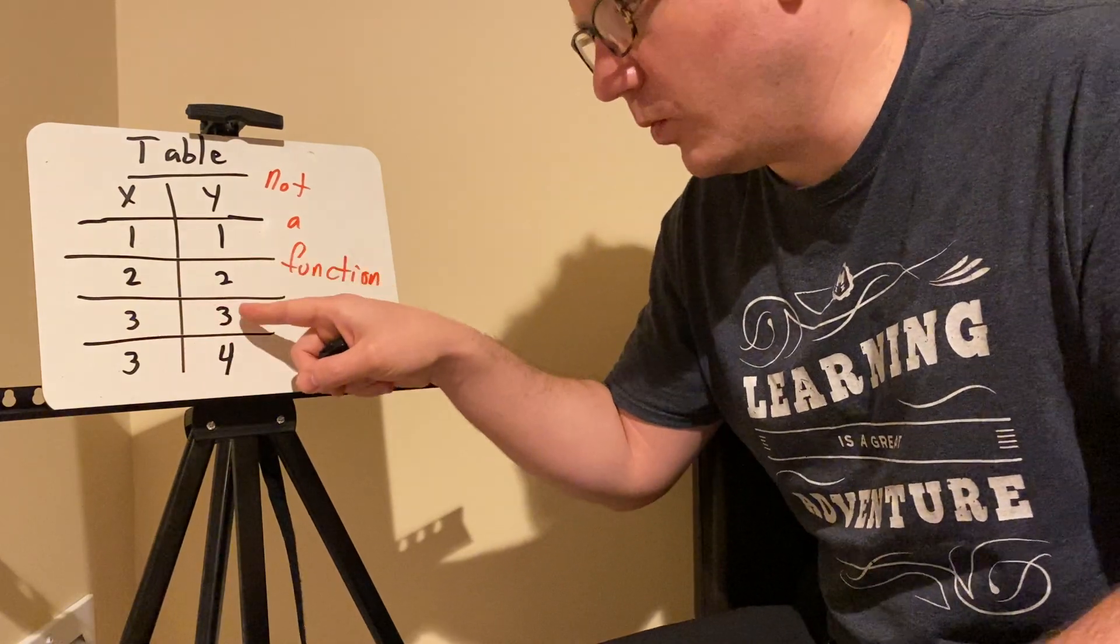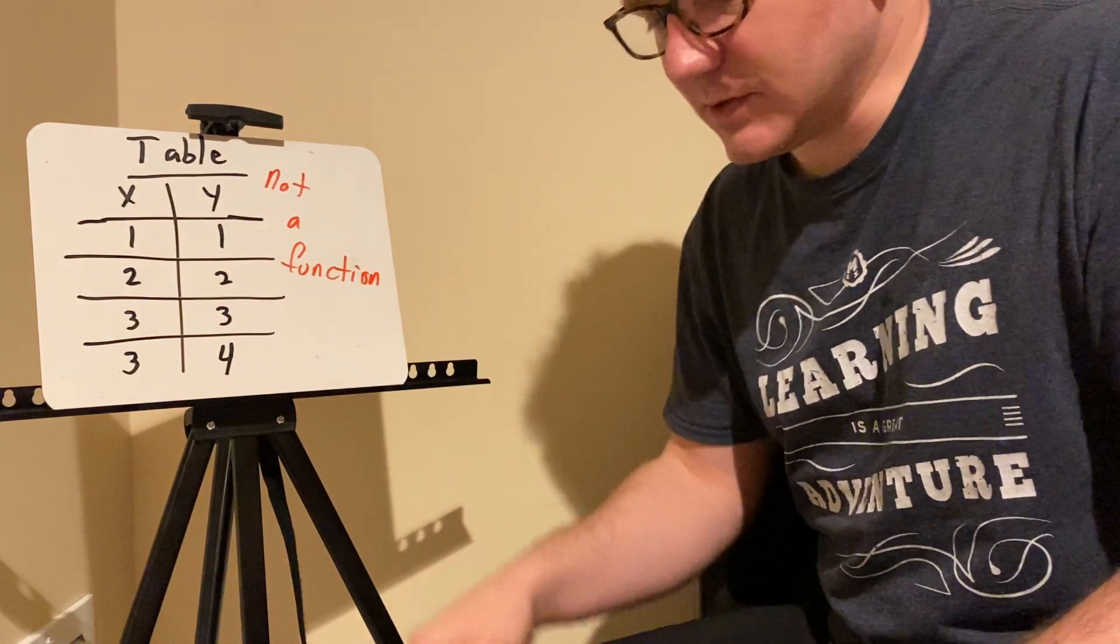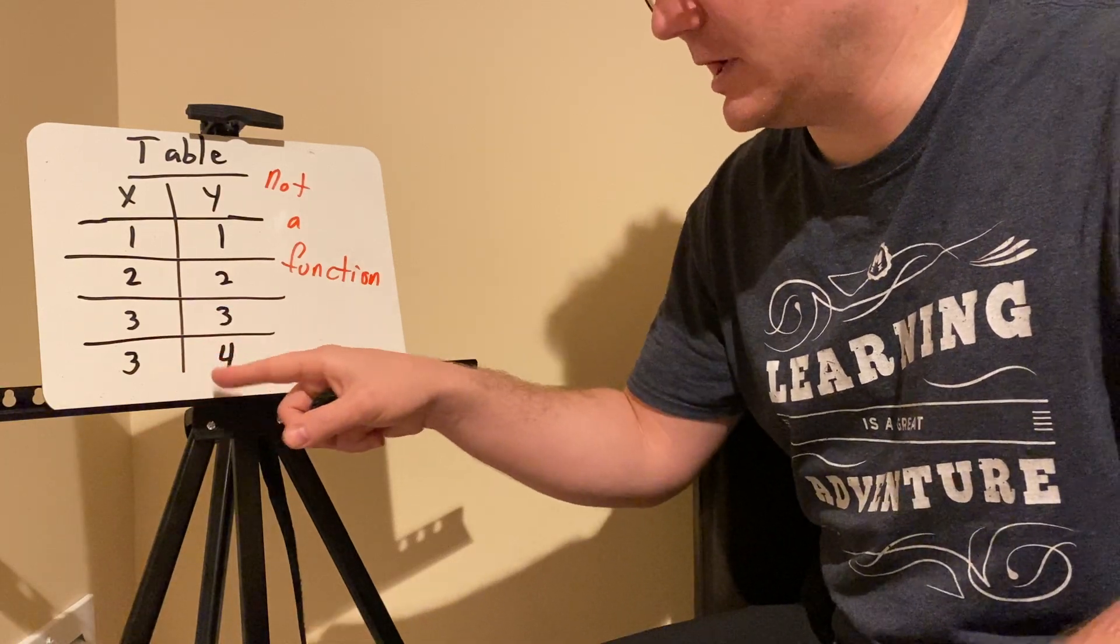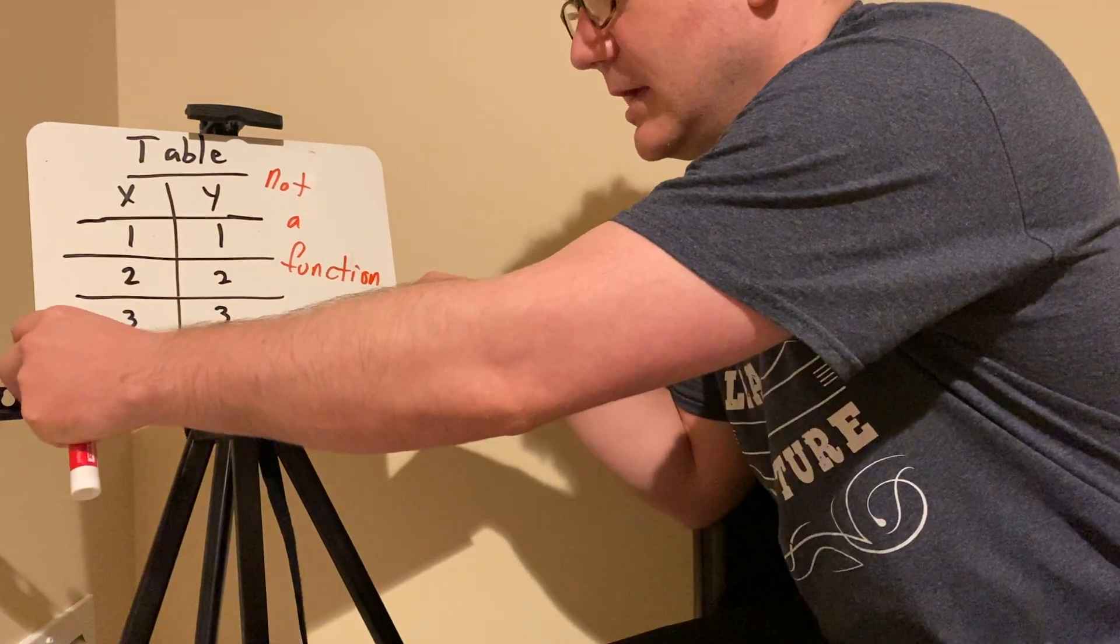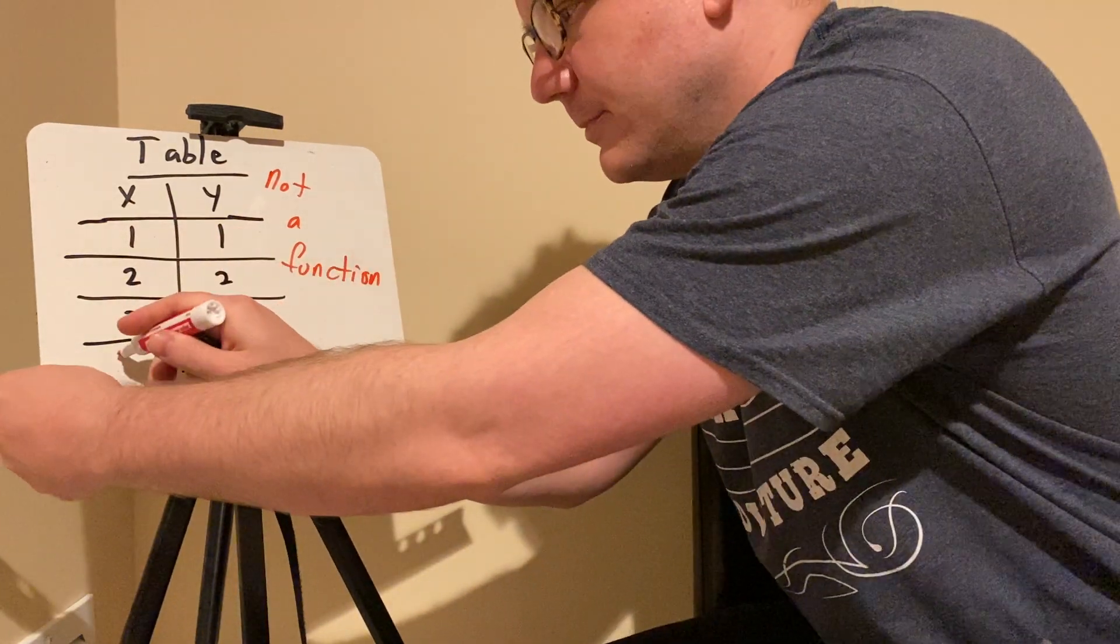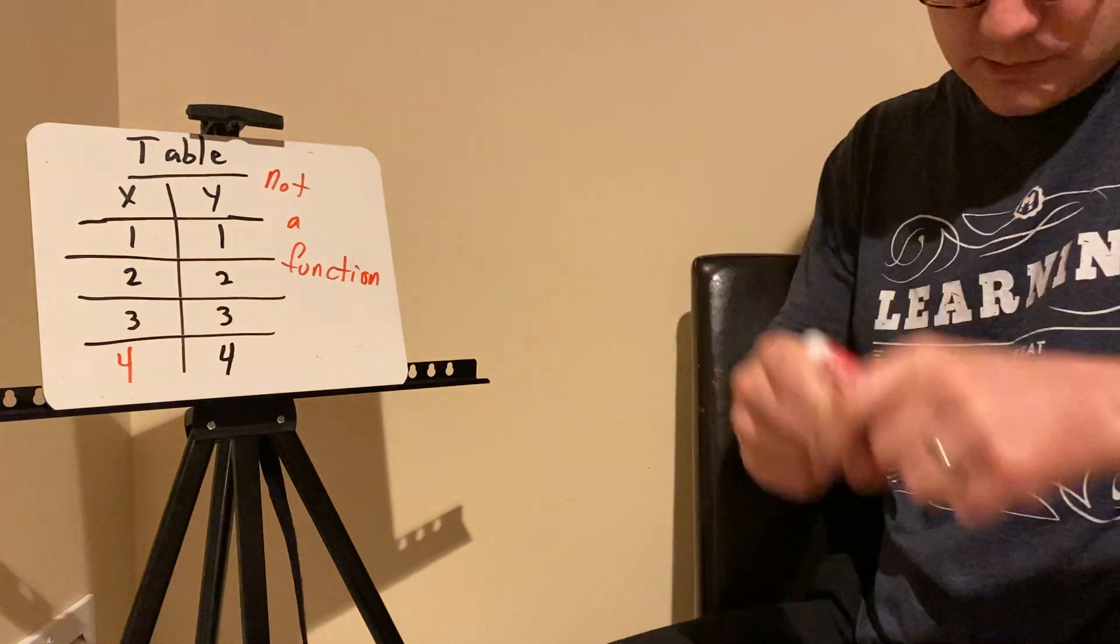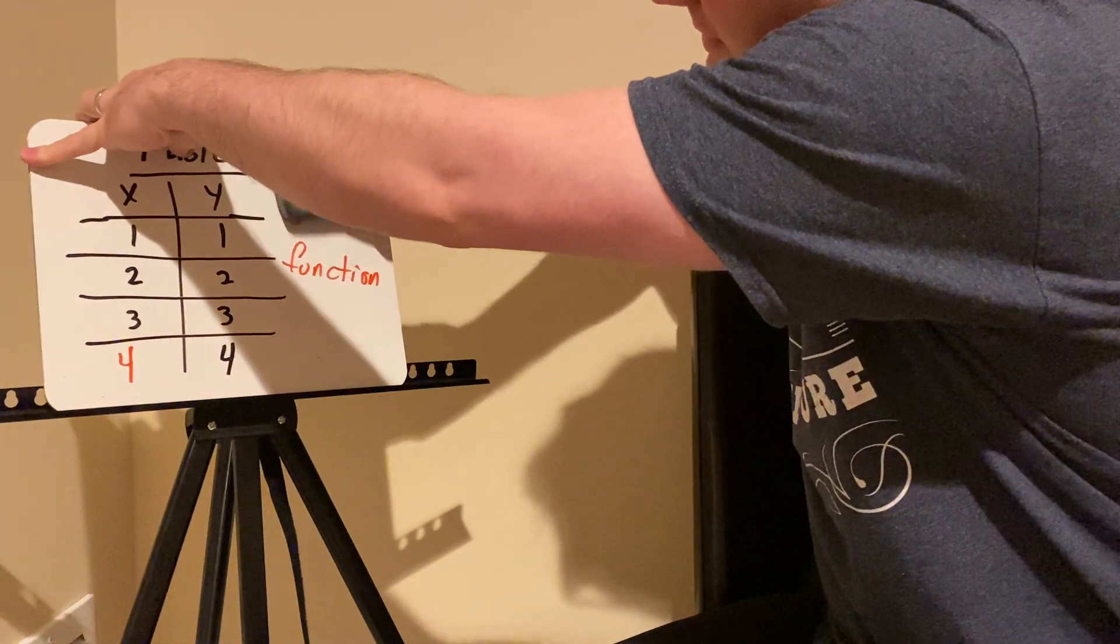Each input can have exactly one output. So when you have an input of three and an output of three and an input of three and output of four, that's not a function. However, we can simply just change this one, let's just keep it simple, to four. Now, it is a function.